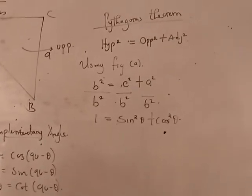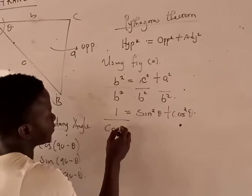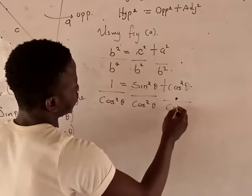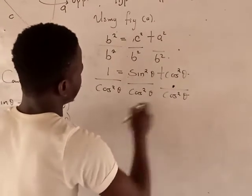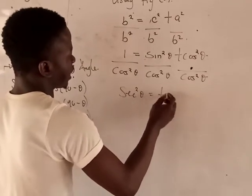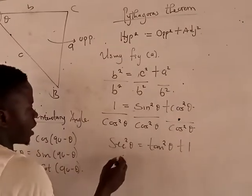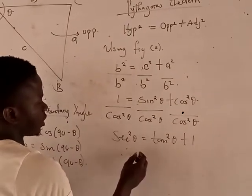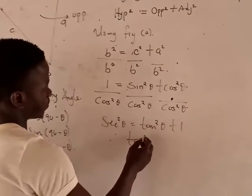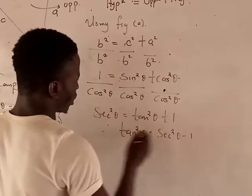We can also divide both sides by cosine squared theta to derive another equation. This will give sine squared theta equals tangent squared theta plus 1, where tangent squared theta equals sine squared theta minus 1.